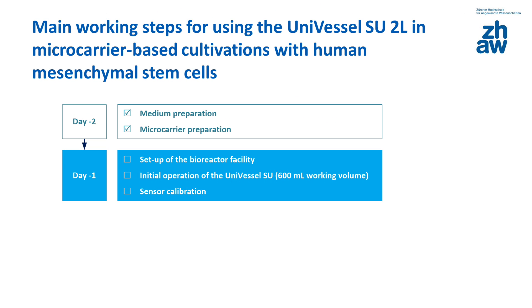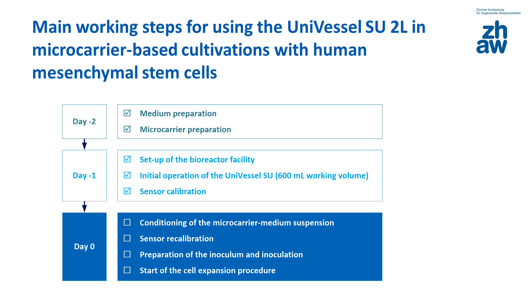After conditioning the microcarrier medium suspension in the bioreactor and carrying out sensor recalibration, we are ready for the cell inoculation. As in the spinner flasks, cryopreserved cells from the vial-based working cell bank are used. Each vial provides enough inoculum for one bioreactor.